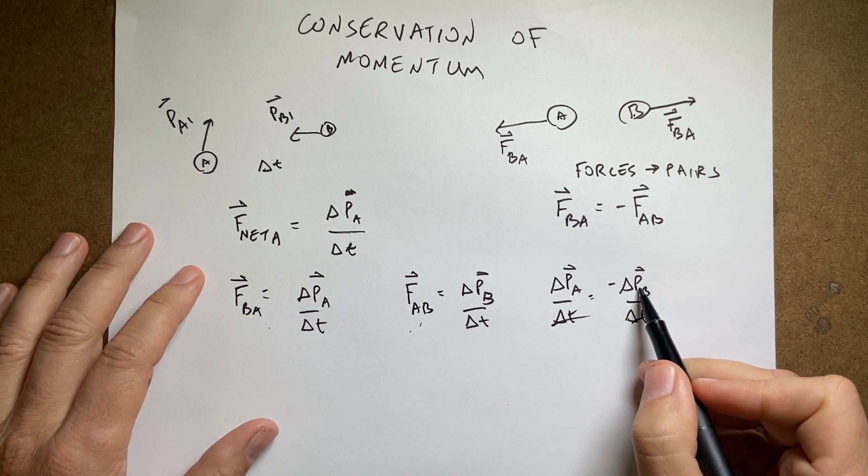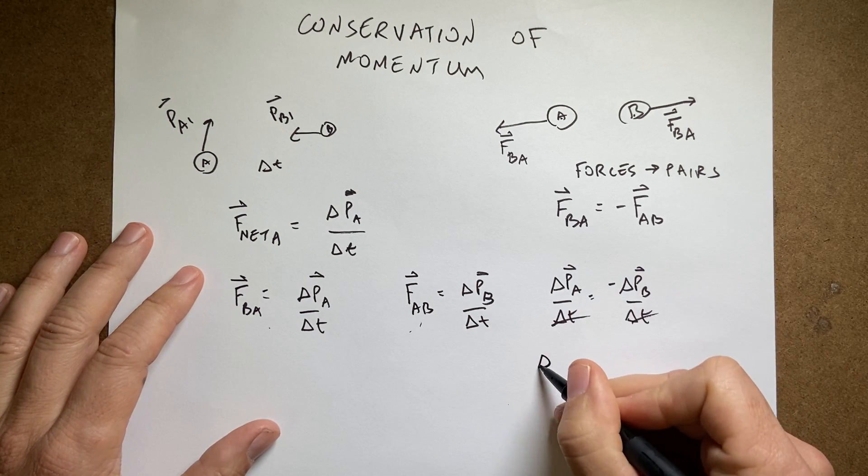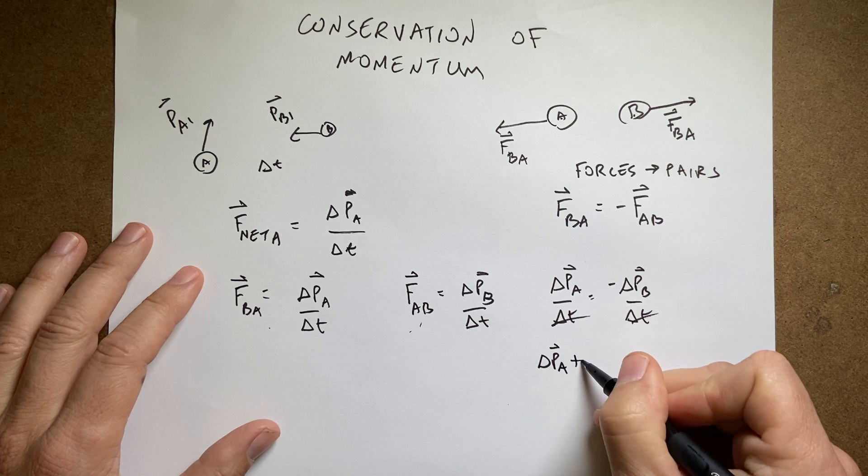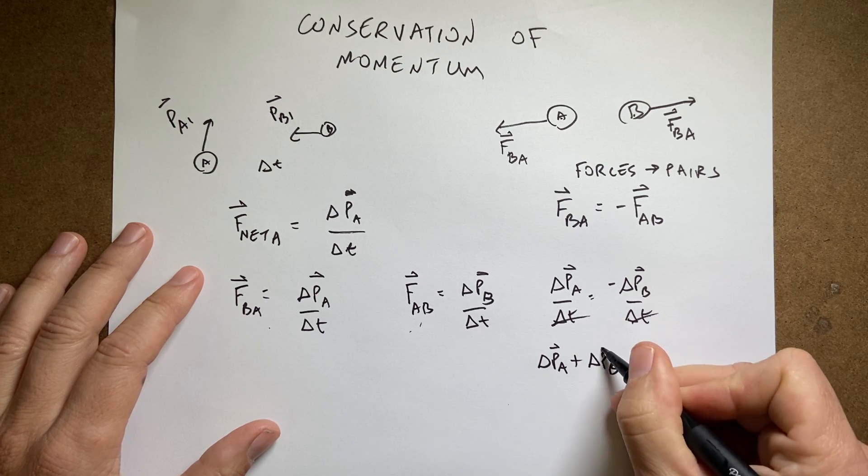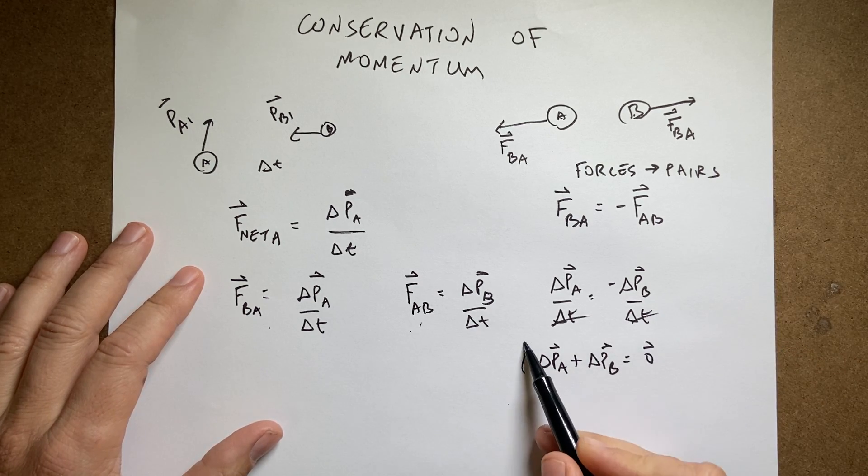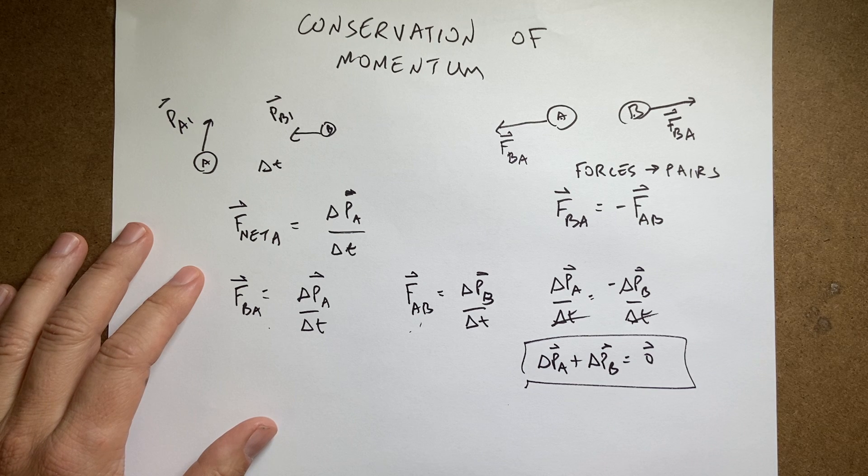So, now I can add delta PB to both sides. I get delta PA plus delta PB equals zero, the zero vector. And, this is conservation of momentum.